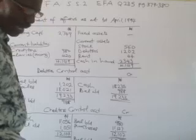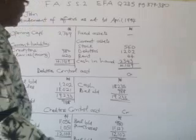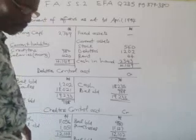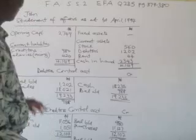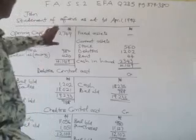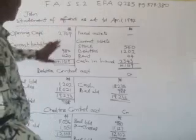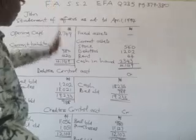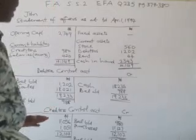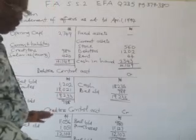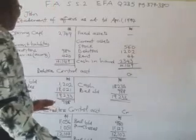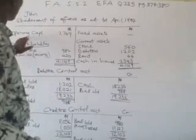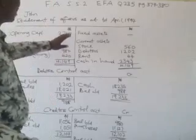On top of it there, you see under it, additional information. As you prepare the SOA, you start with the T format. On the left-hand side, you can see your opening capital — this is derived.